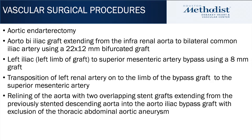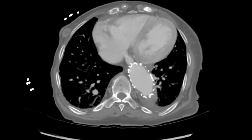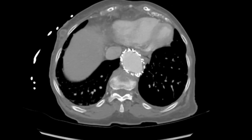She also had transposition of the left renal artery onto the limb of the bypass graft to the superior mesenteric artery. For her thoracoabdominal aortic aneurysm, she had relining of the aorta with two overlapping stent grafts extending from the previously stented descending thoracic aorta into the aortobiiliac graft.